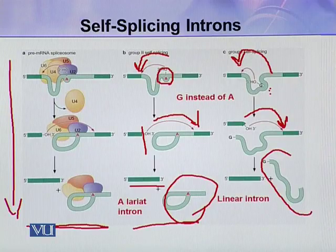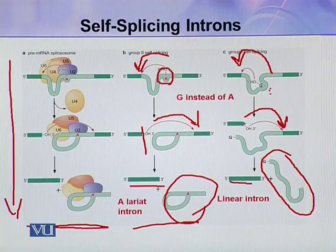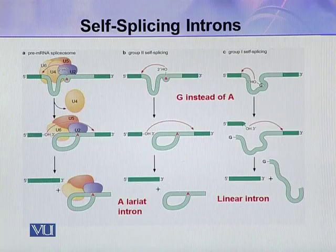In group 1 self-splicing, a linear intron is released and the two exons are joined. This figure provides a comparison of the three splicing mechanisms.